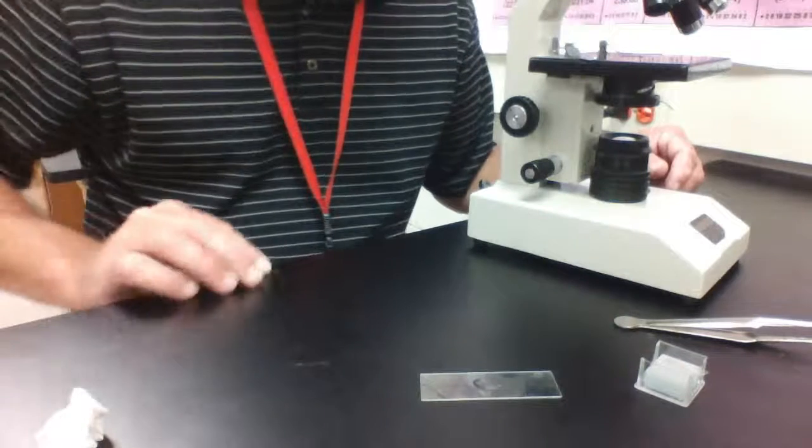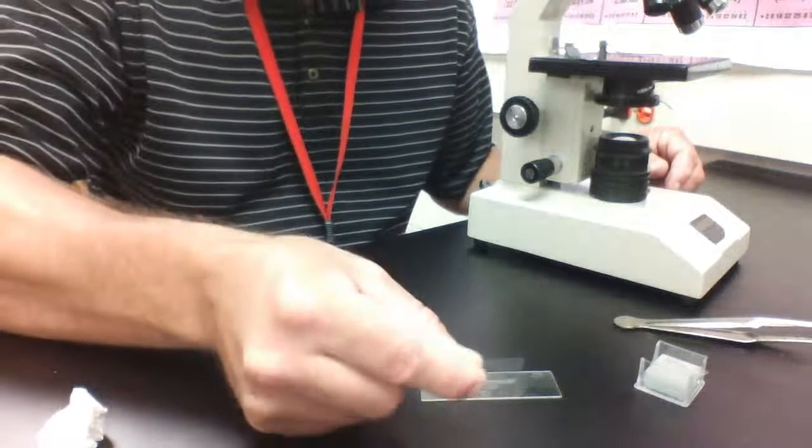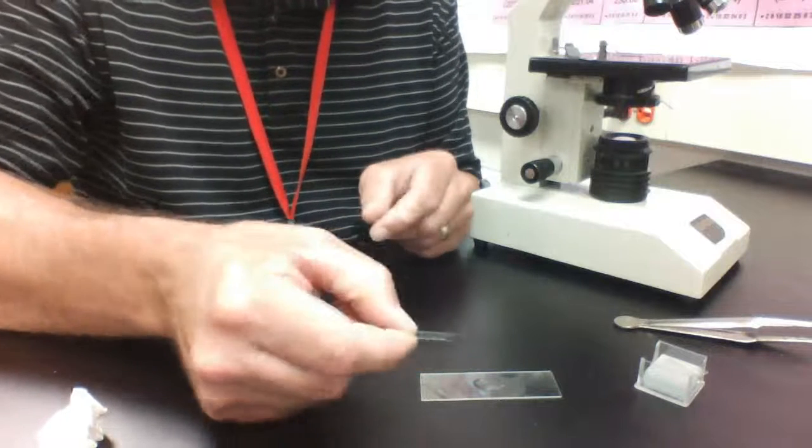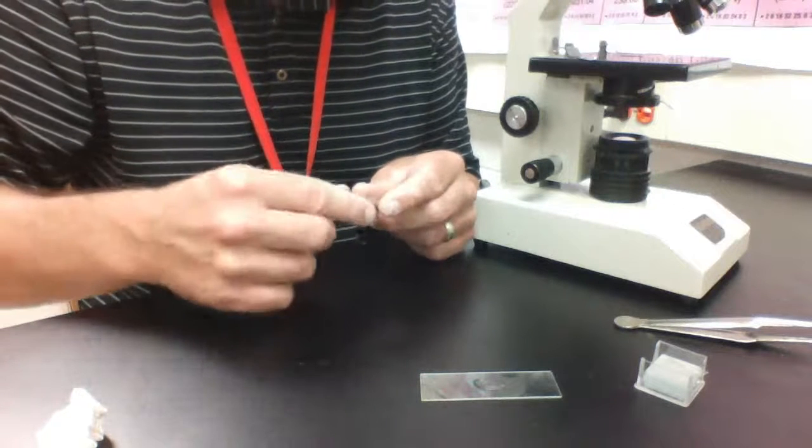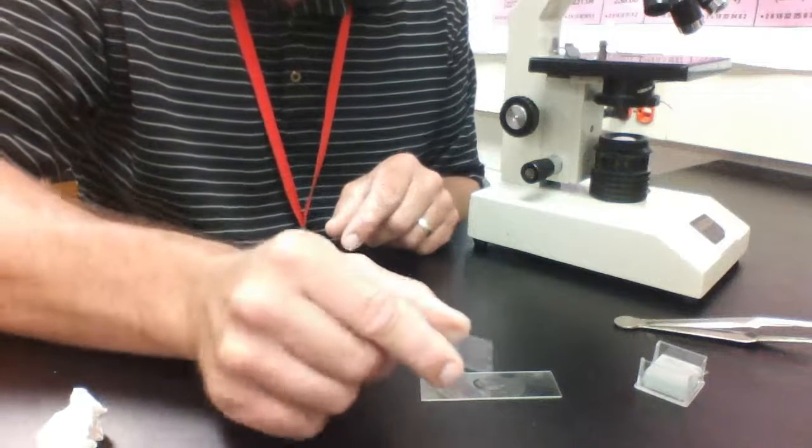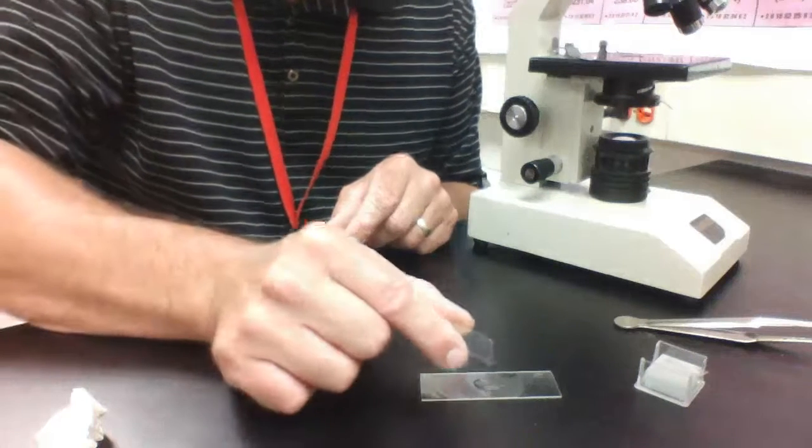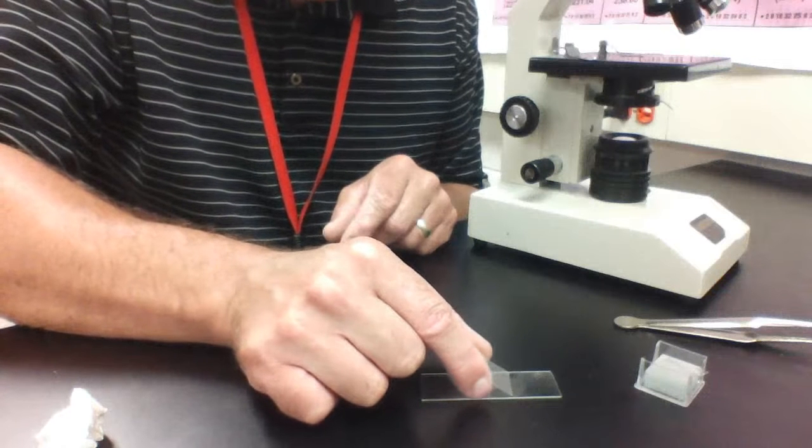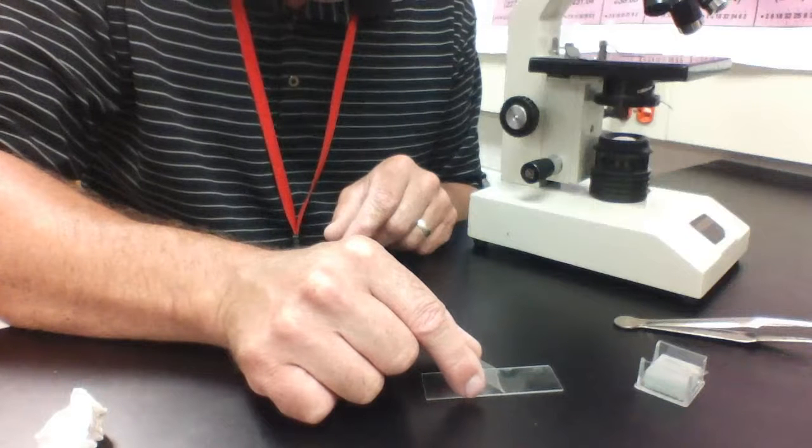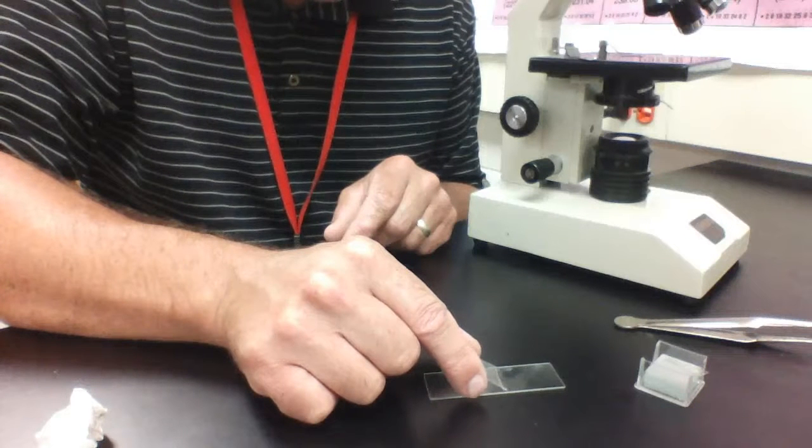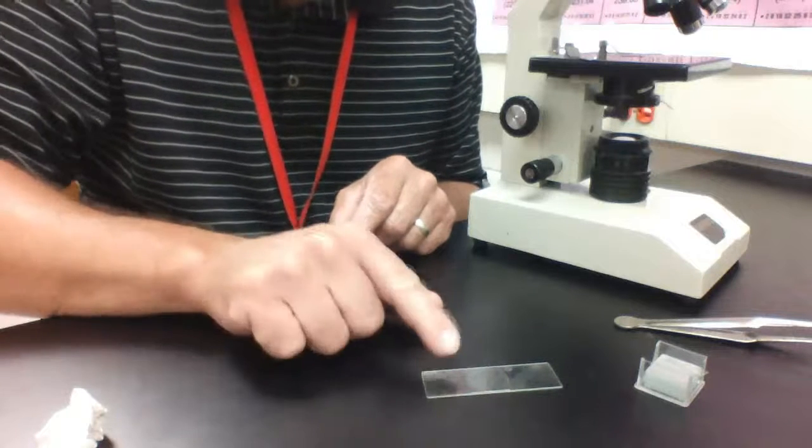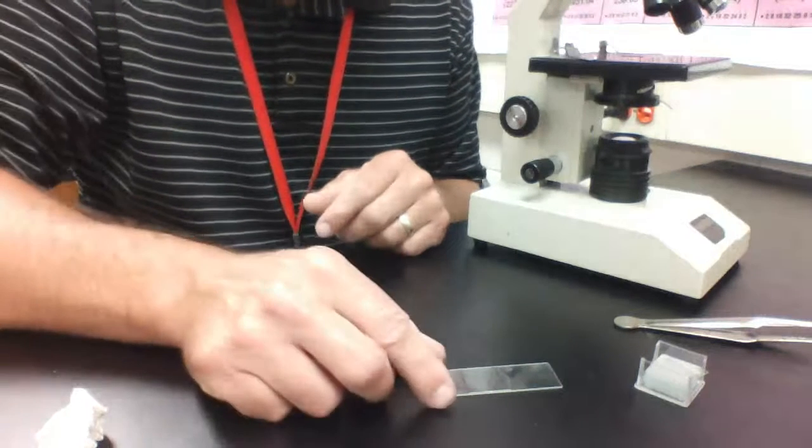And I'm then going to place a cover slip over the top of it. So the cover slips are very fragile. They're made out of glass, and you should handle them by the edges to prevent fingerprints showing up on the glass. So make sure they're clean, and when you place it on your glass slide, you want to simply hold it on a 45-degree angle until the water touches the edge of the slide or the cover slip, and then drop it down gently to prevent any type of bubbles from forming. So I just made my first wet mount.